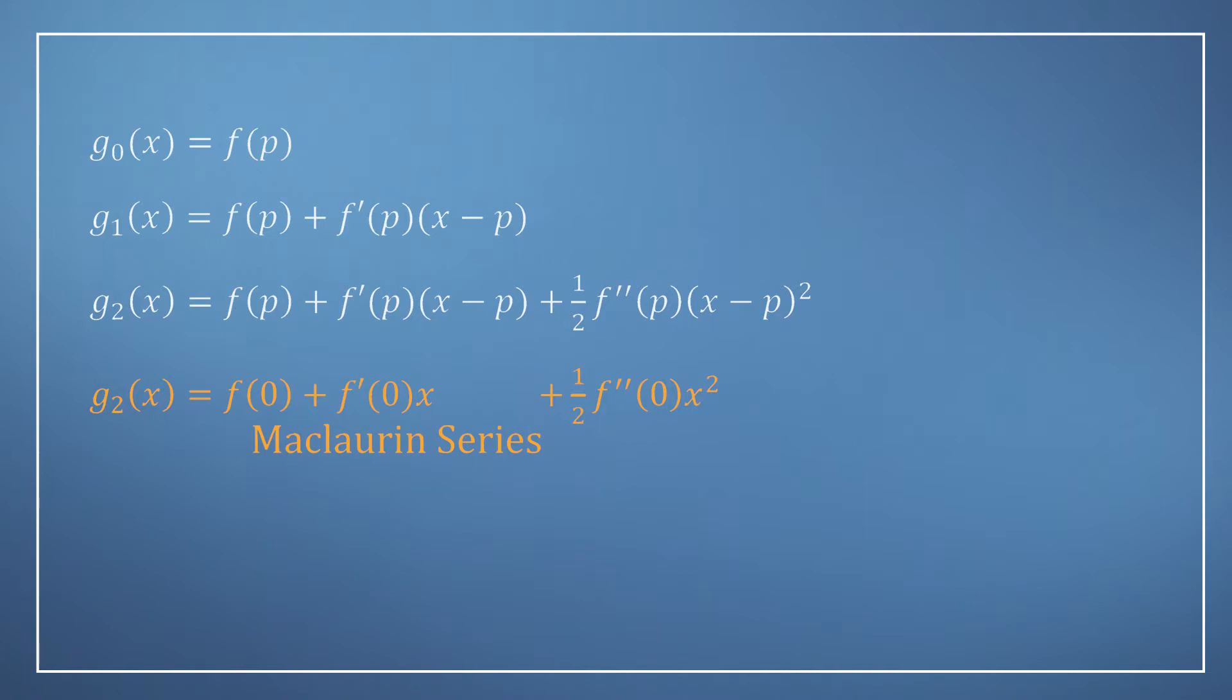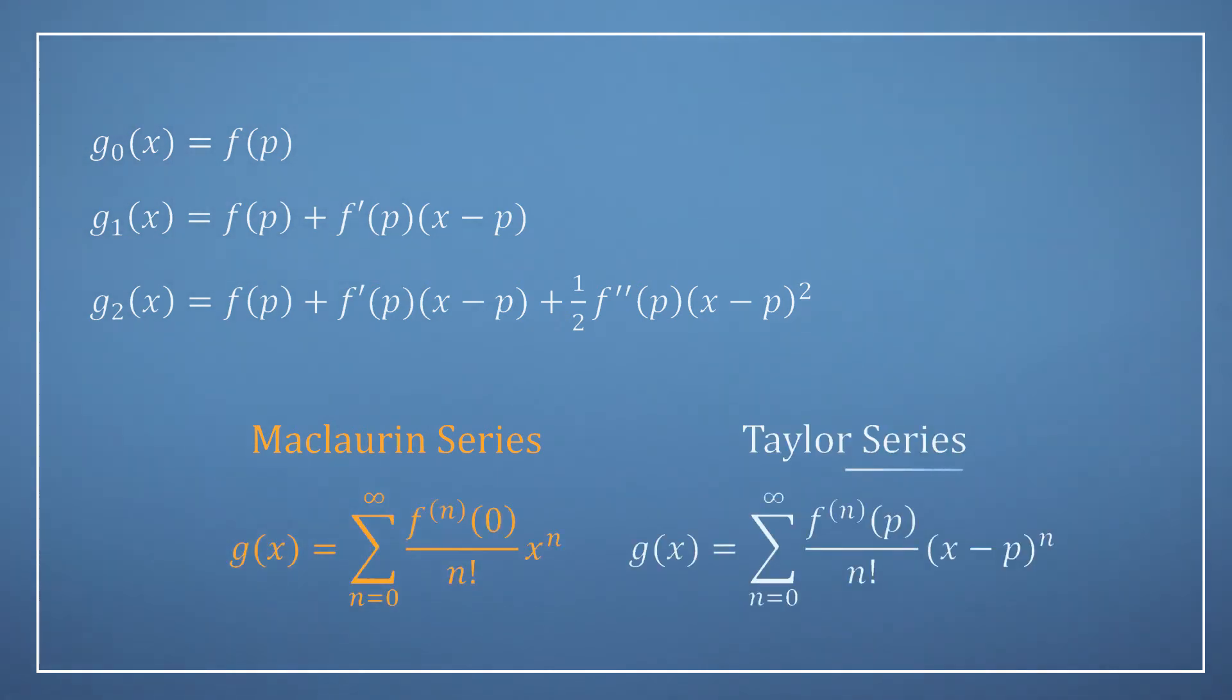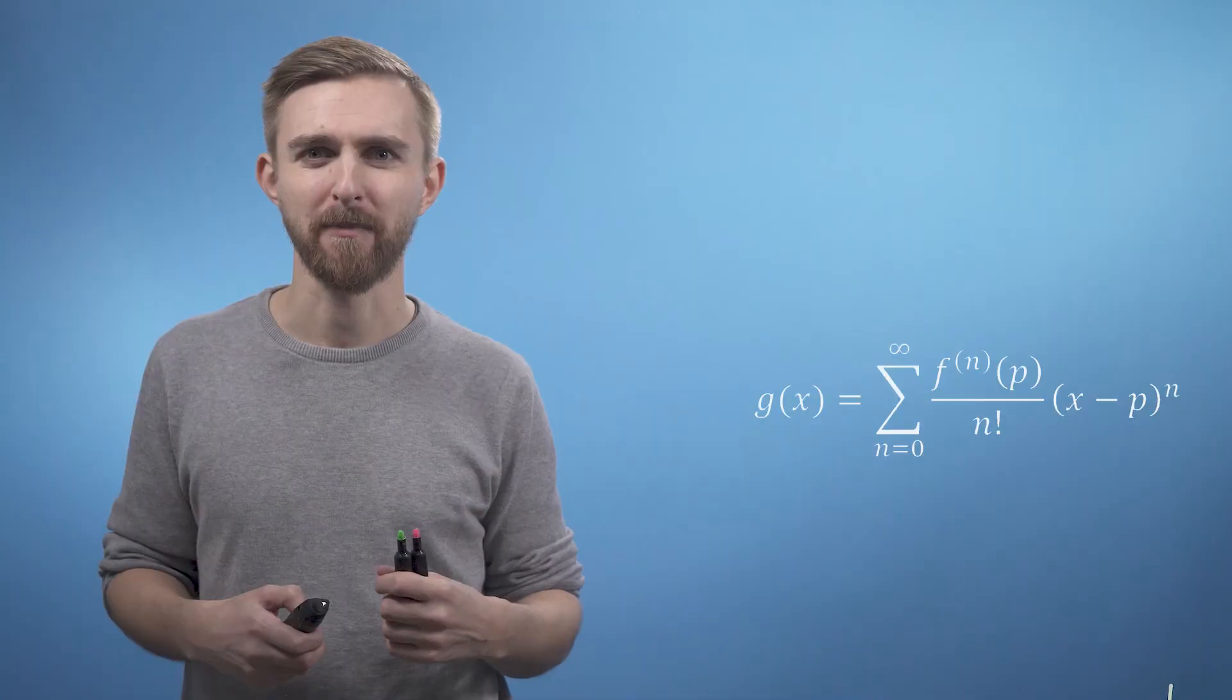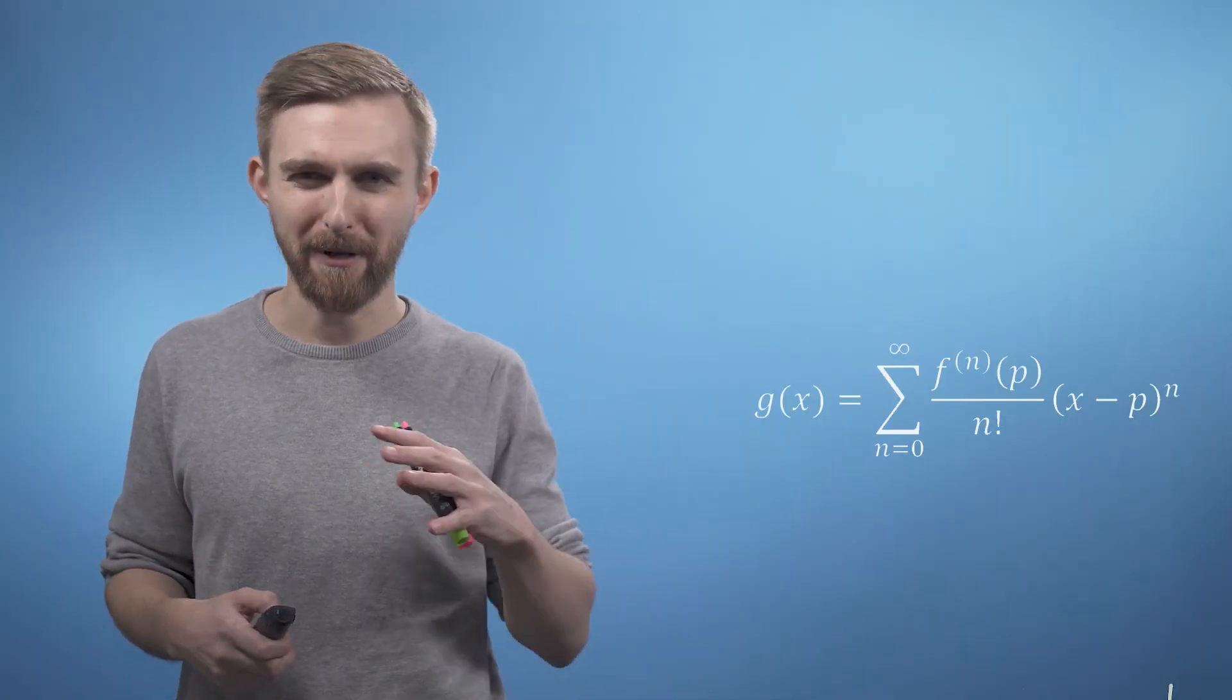So we can now look at our concise summation notation for the Maclaurin series and upgrade the whole thing to the more general Taylor series form, noticing of course that if we decide to set p to zero, then the expressions would actually become identical. So we now have our one-dimensional Taylor series expression in all its glory, which will allow us to conveniently re-express functions into a polynomial series. In the remainder of this module, we're going to play around with this result, as well as extending it to higher dimensions. See you then.